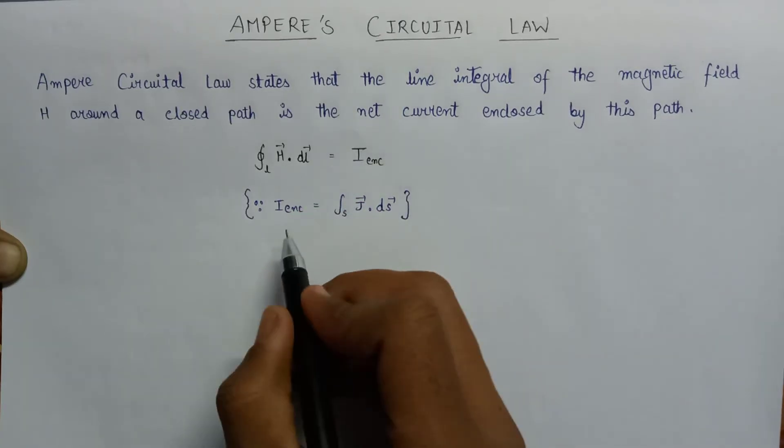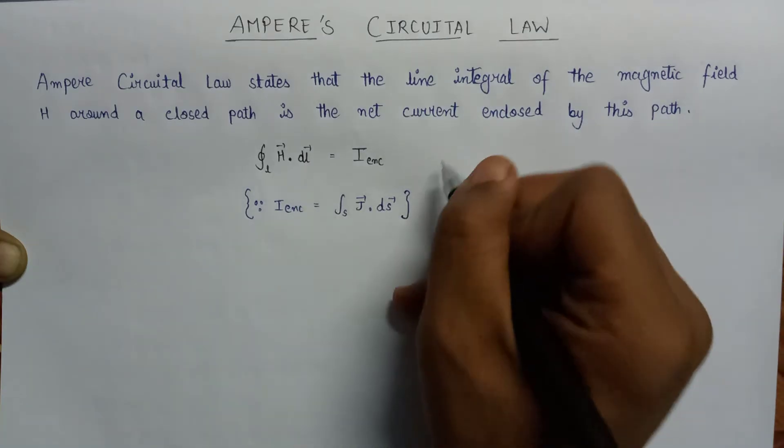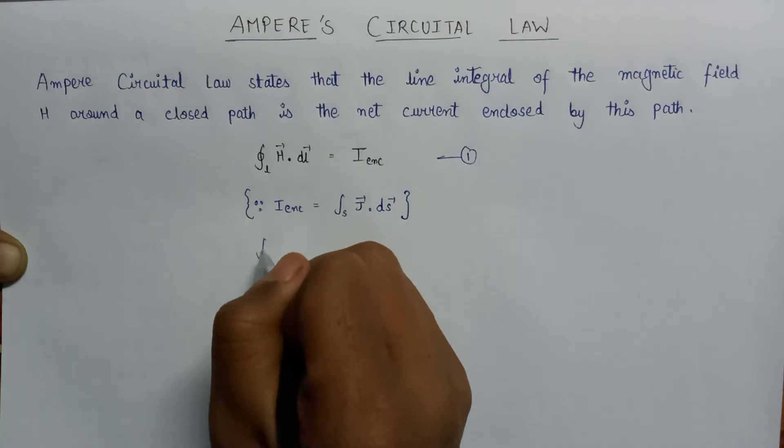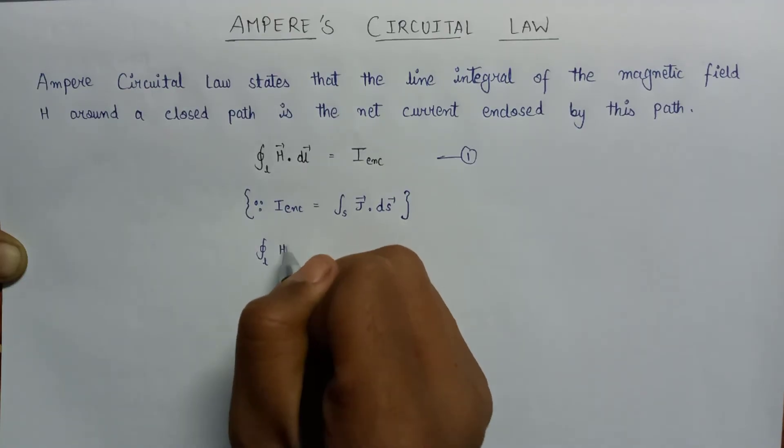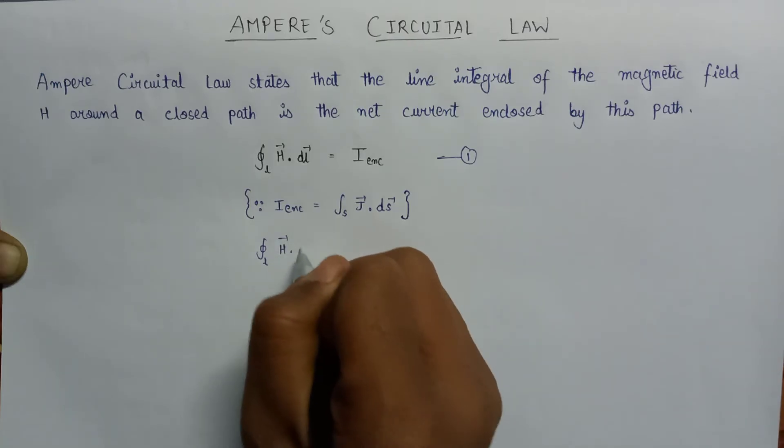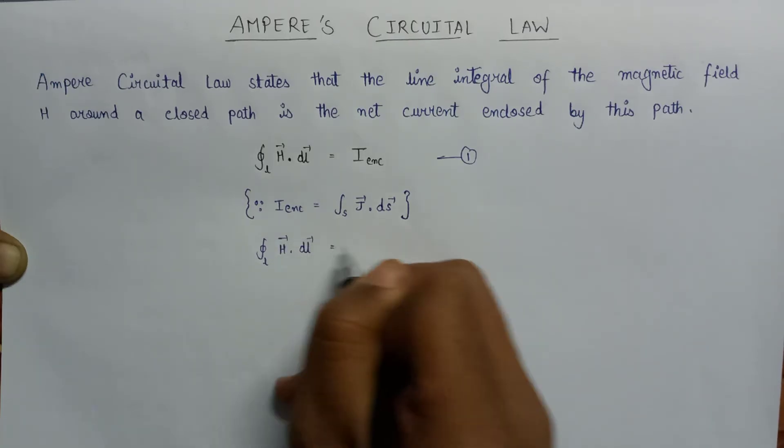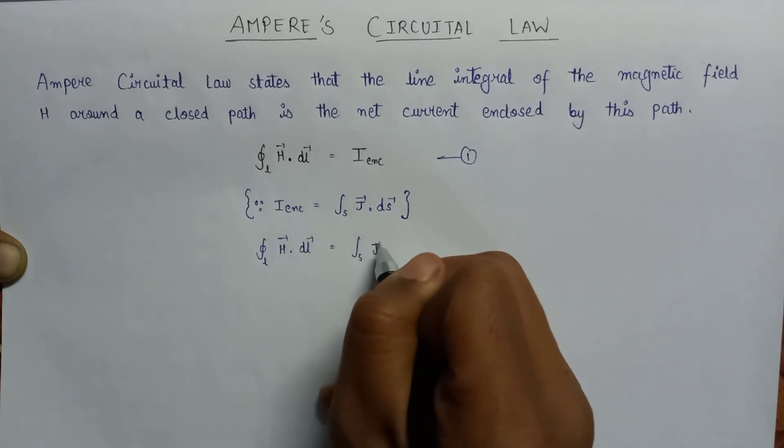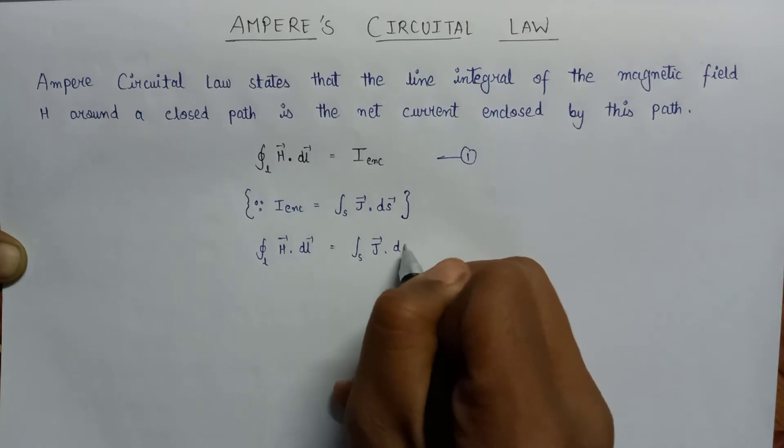Substituting the value of current enclosed by a path in equation 1, we get line integral over closed path H vector dot dL vector equals integration over surface J dot dS.